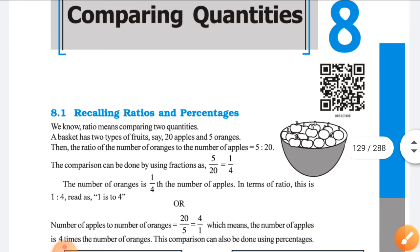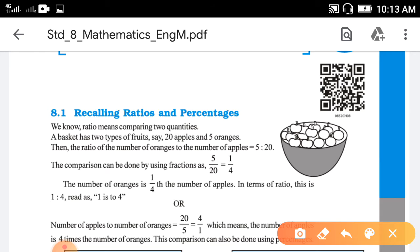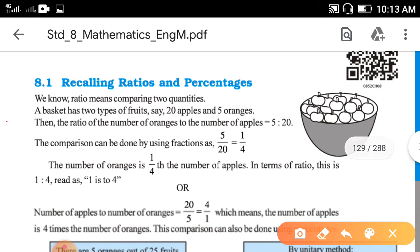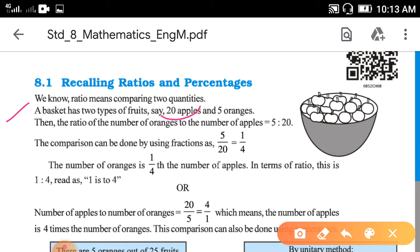In the previous lessons, you might have heard the word ratio. What is the meaning of this ratio? It means comparing two quantities. For example, a basket has two types of fruits: apples and oranges.